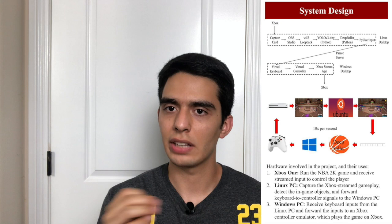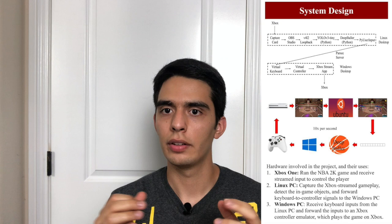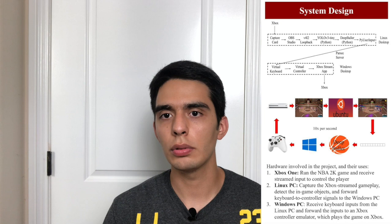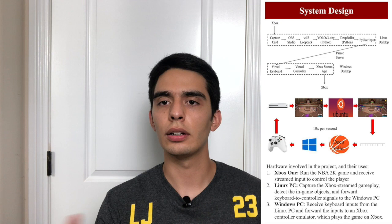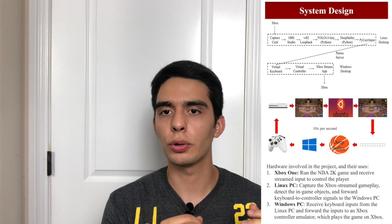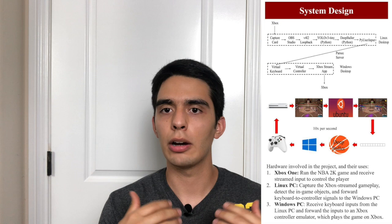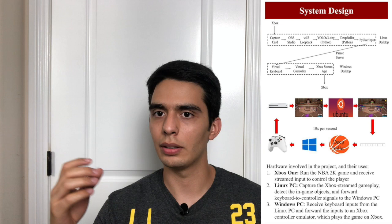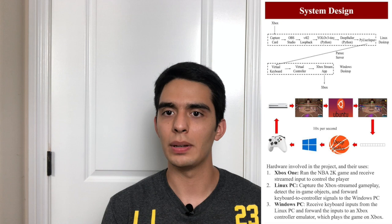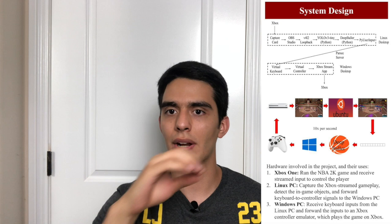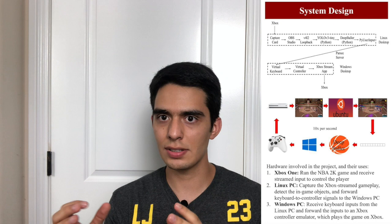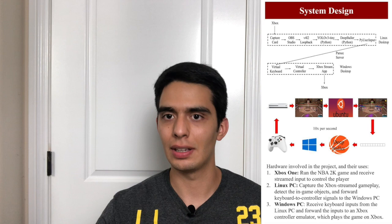Once our game-playing agent was trained and complete, we had a system of three devices: an Xbox console, a Linux PC, and a Windows PC. The Xbox would stream gameplay to a capture card, which fed into the Linux PC. The Linux PC ran a build of YOLO that could apply the algorithm to live streams rather than pre-saved videos. It would convert the video input into object coordinate data, feed those coordinates into the game-playing agent, and output Xbox controller inputs. Those inputs were then sent through a server to the Windows PC, which sent them back to the Xbox via the Xbox Companion app.